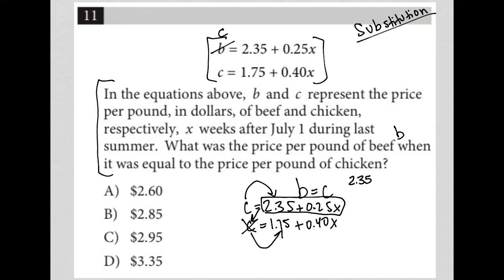This gives -0.15x = -0.60. Dividing both sides by -0.15 gives x = 4.